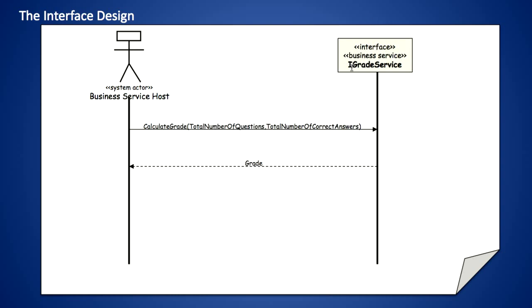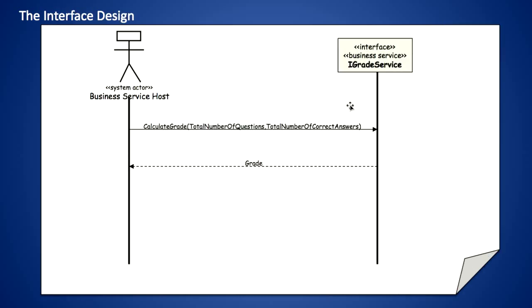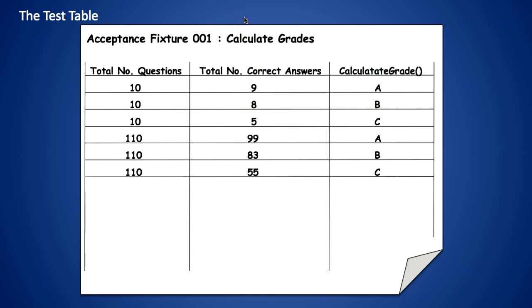It takes the total number of questions, the total number of correct answers, and it's going to return a grade. We're going to call this operation calculate grade. Here we can see the transition from where we're beginning to gather our requirements to the process of design. Assuming we've done this work and made that executable specification pass, we can take it back to the customer.